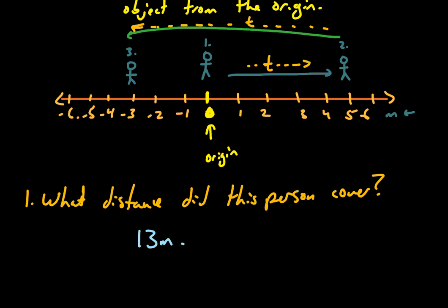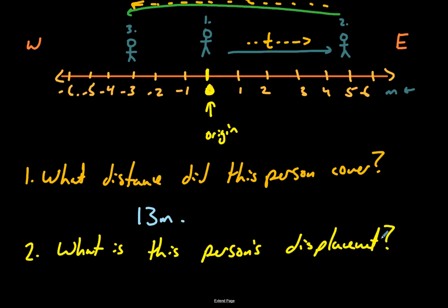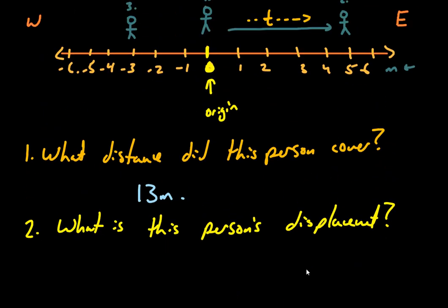We could actually even throw in directions here. We could say that this was to the east and this is to the west. Now the second question is where it gets more interesting. What is this person's displacement? There's a little trick for showing how you find displacement. But all we really need to say is this person is one, two, three meters out of place. And since it's a vector, we need to say a direction. Three meters west of where they started.